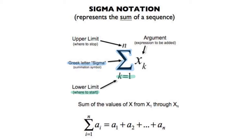The next thing we want to take a look at is the upper limit, and this is important because it tells us where we are going to stop — what term number in our sequence are we going to stop with. The last part is the argument: what is the rule that we are using for our sequence? This is typically an explicit rule — an expression that we are going to use to add with.